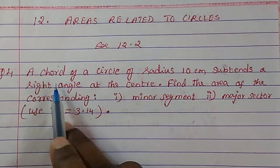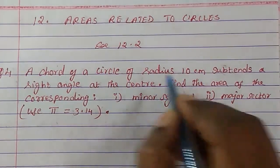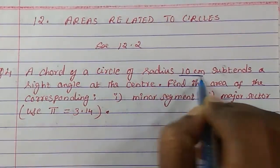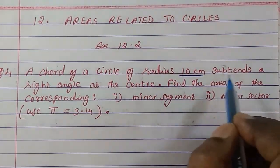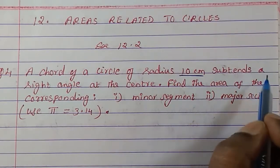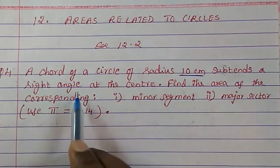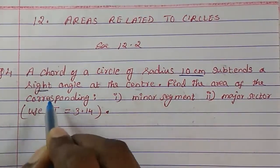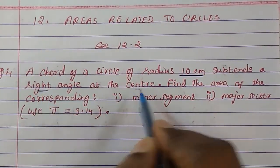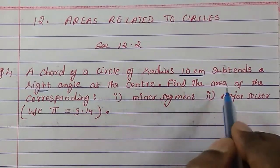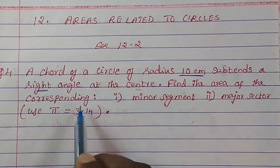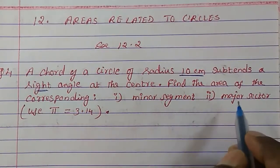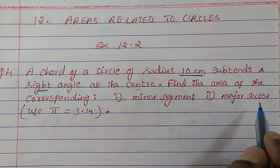A chord of a circle of radius 10 cm subtends a right angle at the center. Find the area of the corresponding minor segment and major sector.